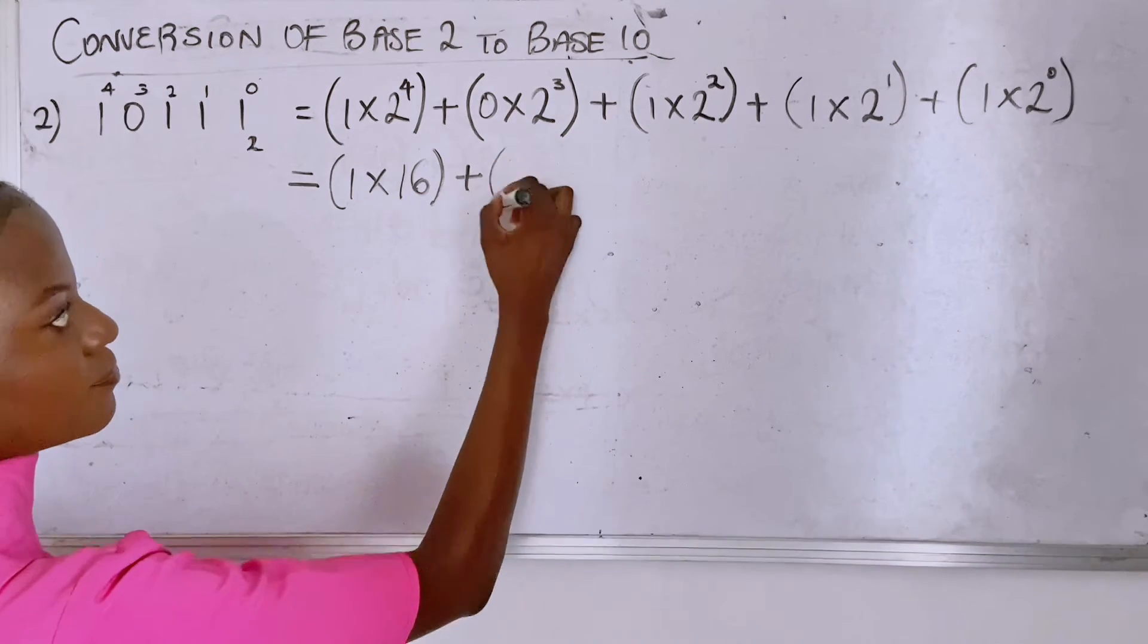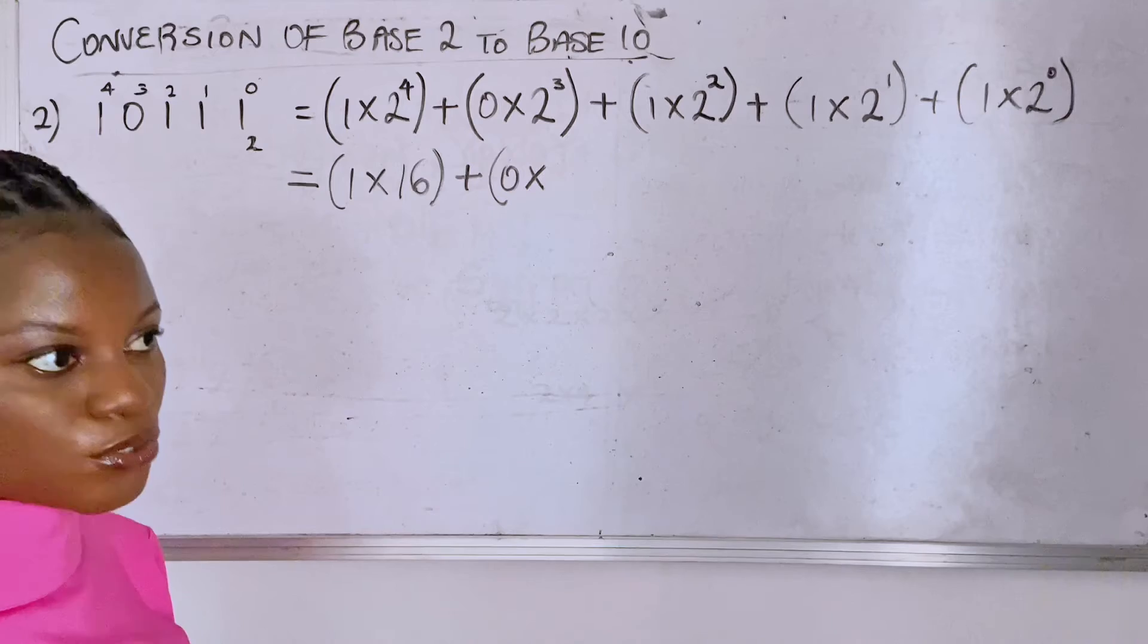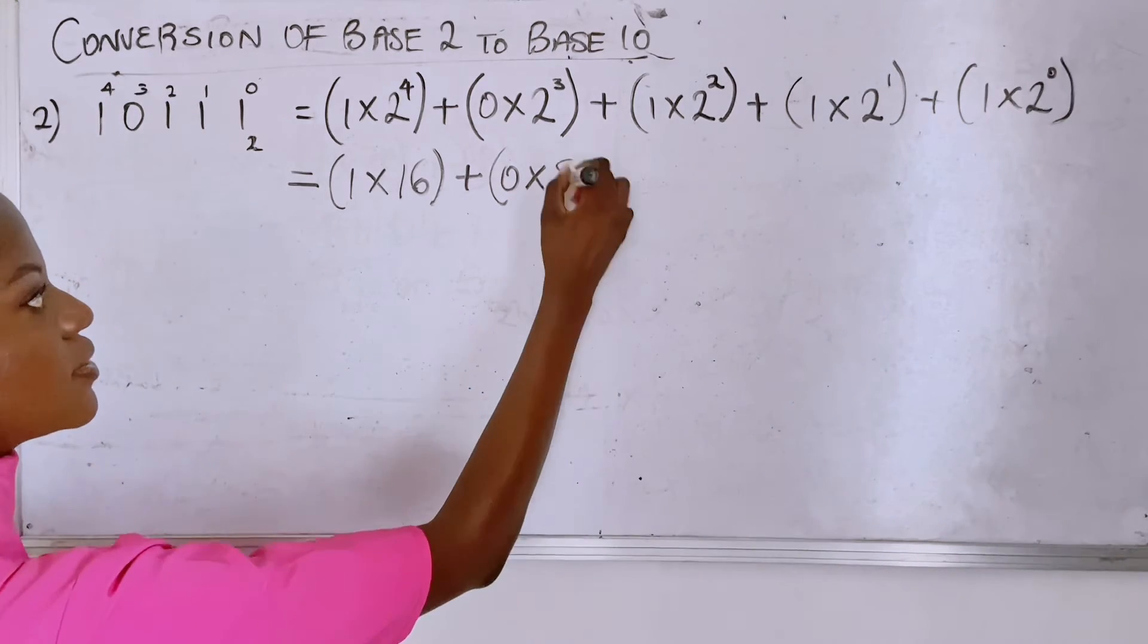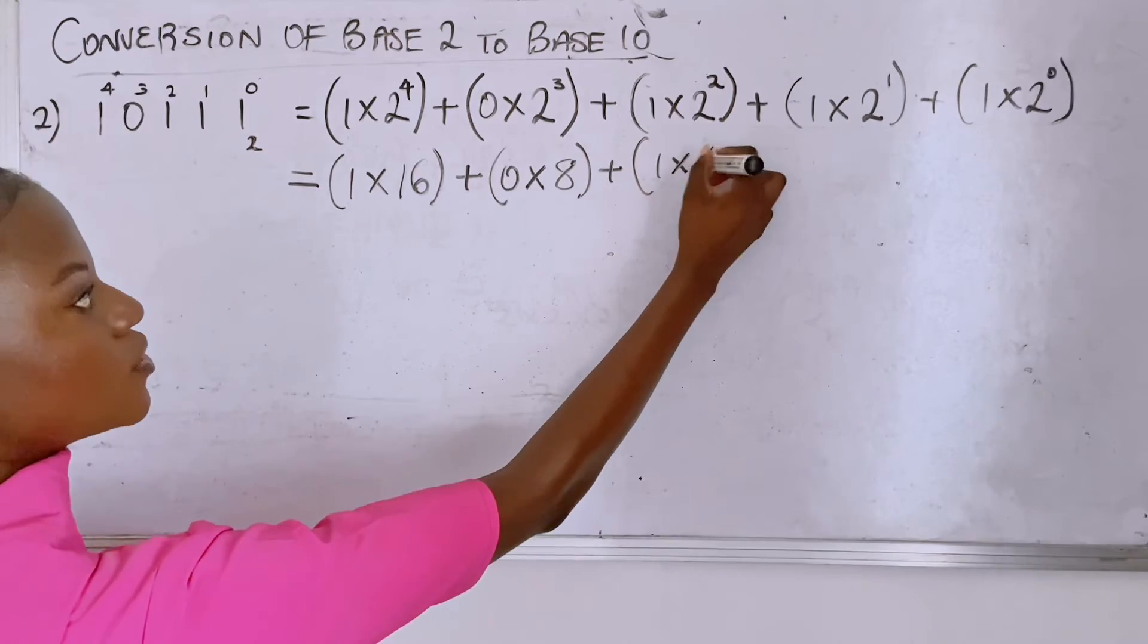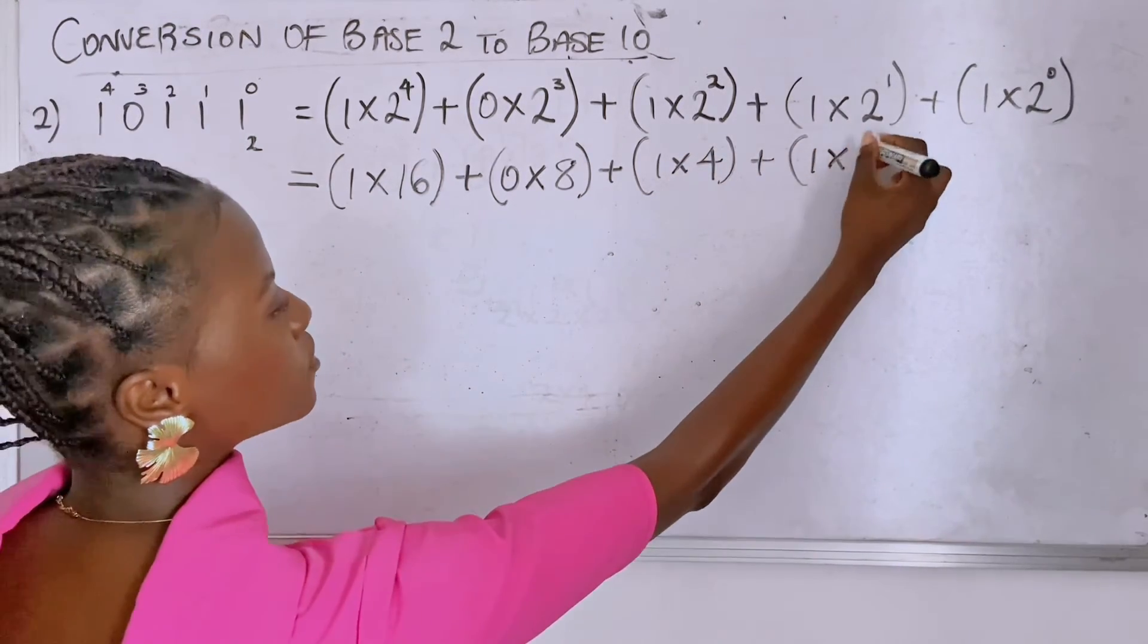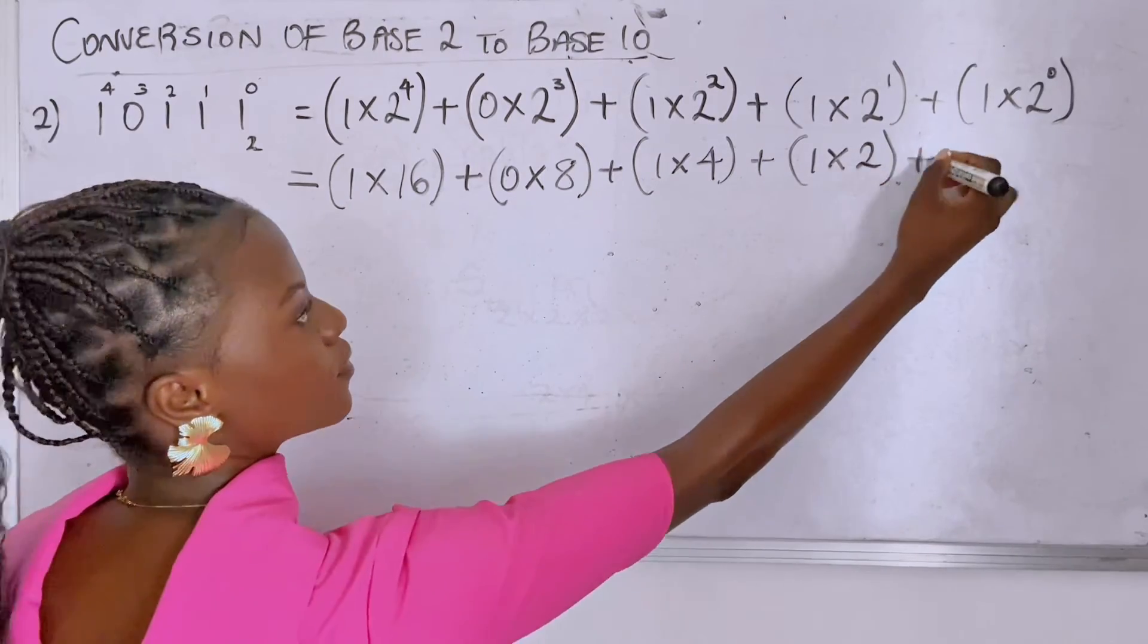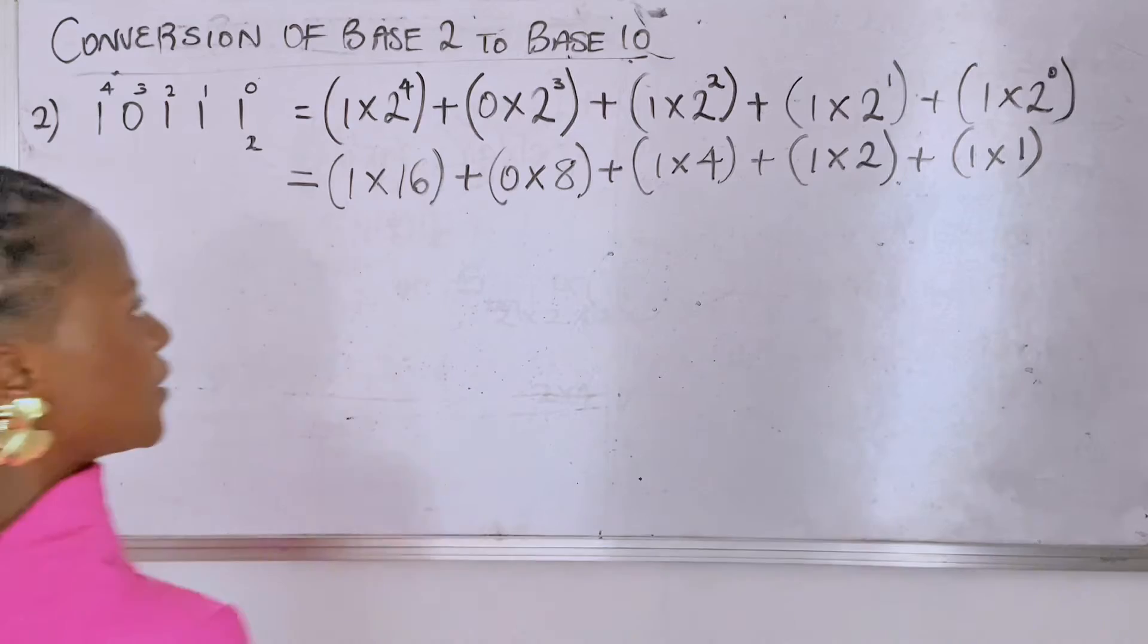So two raised to three, of course two times two times two in three places, that's eight. Plus two raised to two is four, plus one times two raised to one is two, plus one times two raised to zero is one.